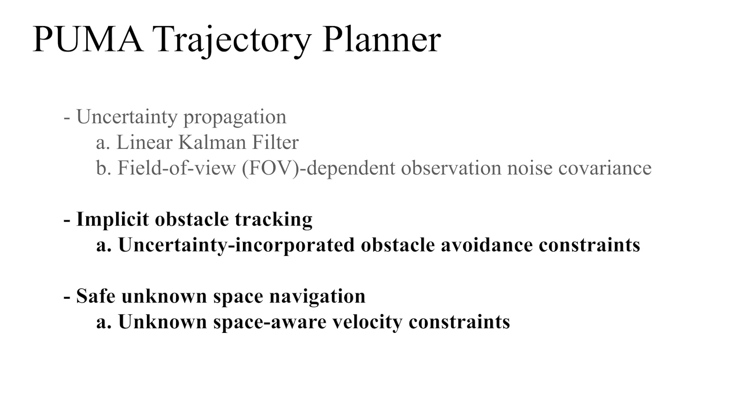However, always tracking obstacles could lead to dangerous behavior. To overcome this challenge, we introduce implicit obstacle tracking as well as unknown space-aware velocity constraints. This encourages the agent to consider the direction of motion, not just obstacles.